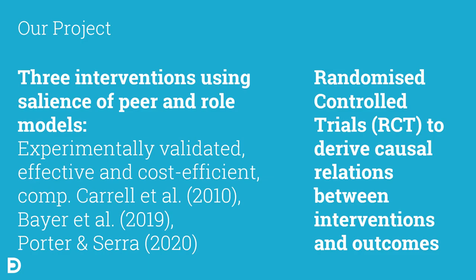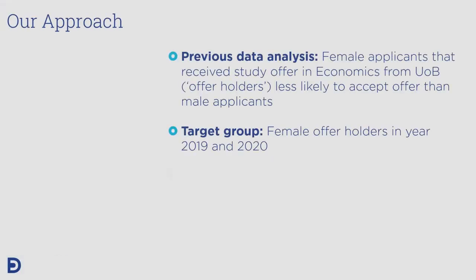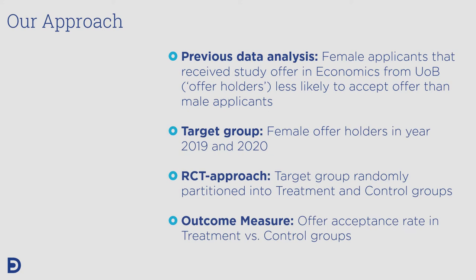Our approach focuses on those female applicants that received an offer to study economics at the University of Bath, which is our target group. We are going to split this target group into a treatment and control group and then compare our outcome measure, which is the offer acceptance rates between those two groups.